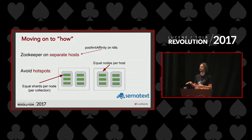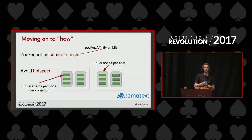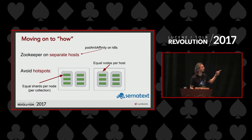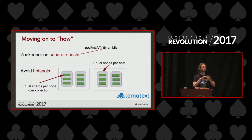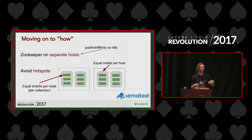Moving to the how-tos: in the demo I only had one Zookeeper, but normally you have more and you need to make sure they're hosted on different hosts so that one going down won't kill everything. In Kubernetes you can do that with pod anti-affinity. The same applies to Solr — you want to balance how many Solr nodes you allocate to the hosts you have, and the same applies to allocating shards to keep your Solr cluster balanced.